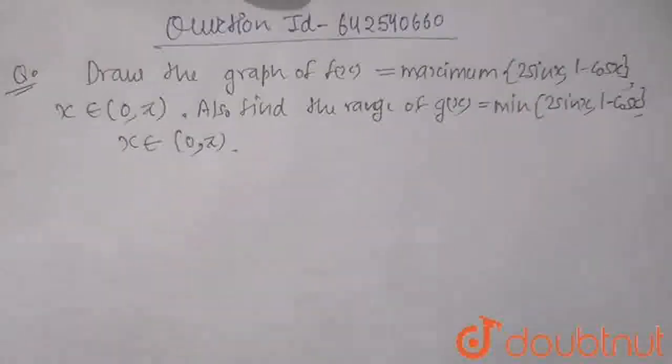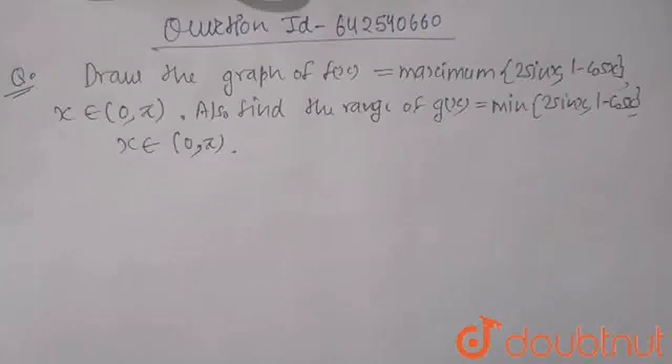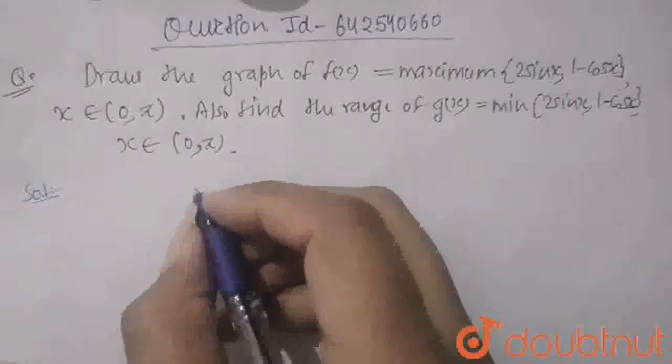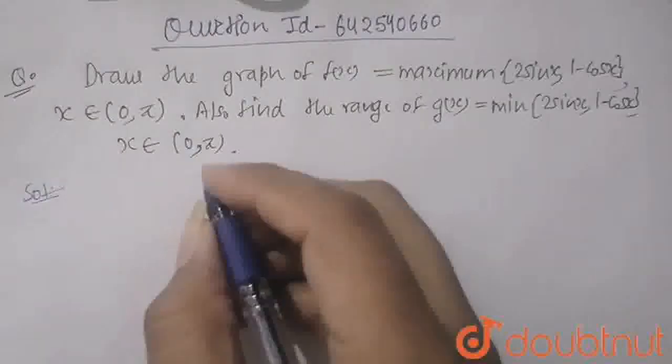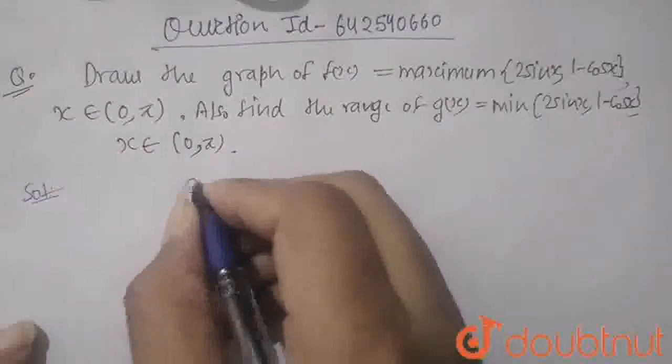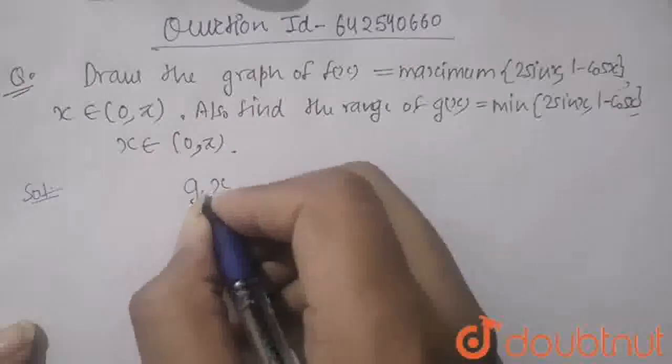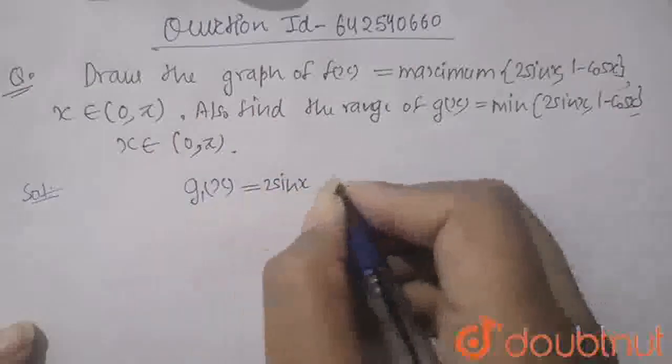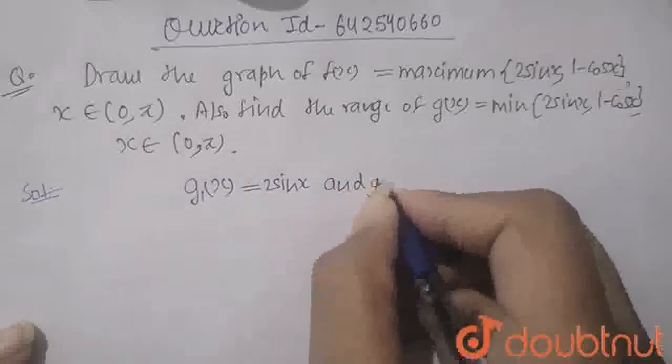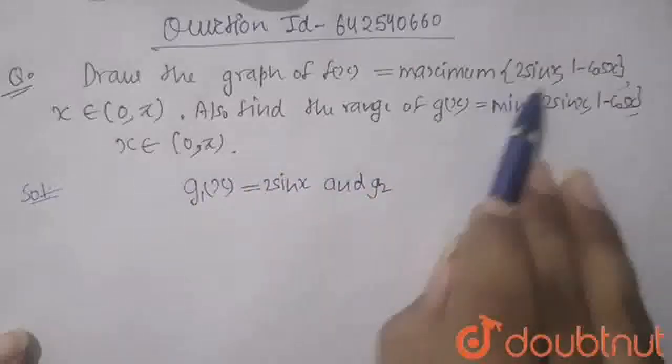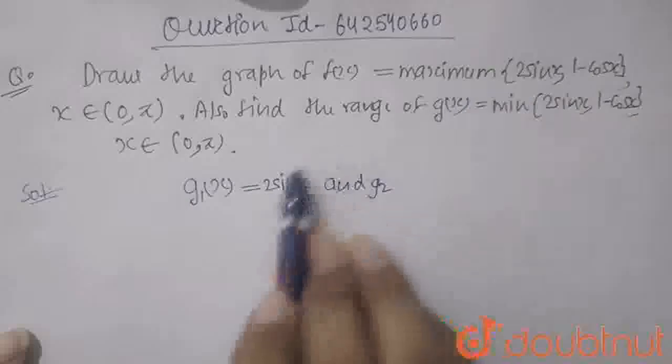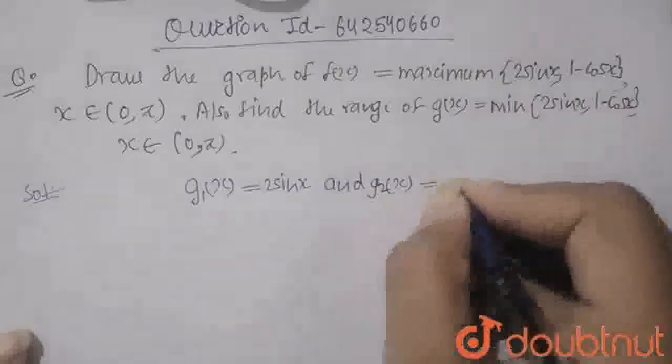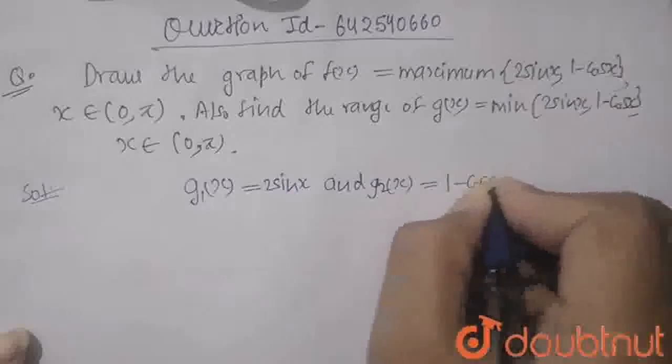Okay, so first what we have to do? Now let's solve it. Here first it is given that we have to draw the graph. So we will take g1x equals to 2sinx. And g2x equals to, as we have to draw the graph of this, so I am taking this part as g1 and this part as g2. g2x equals to 1-cosx.